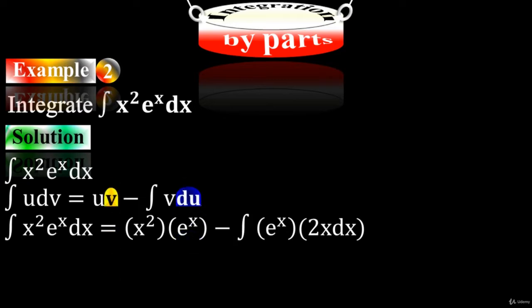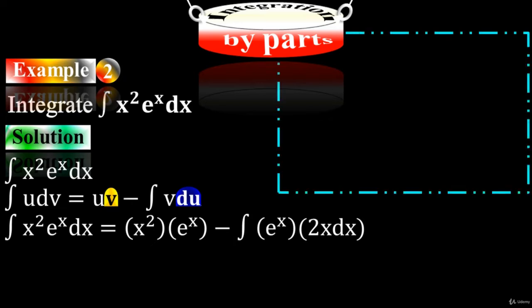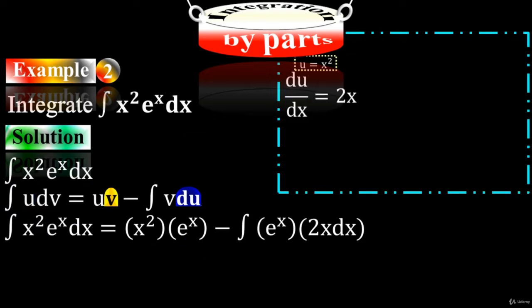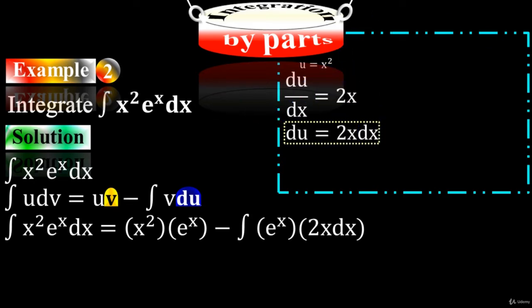How did we get the values for v and du? Let's prove it mathematically. Take u equals x squared and take the derivative on both sides. We have du/dx equals 2x. Moving dx to the right side, we get du equals 2x dx. That's how we got du equals 2x dx.